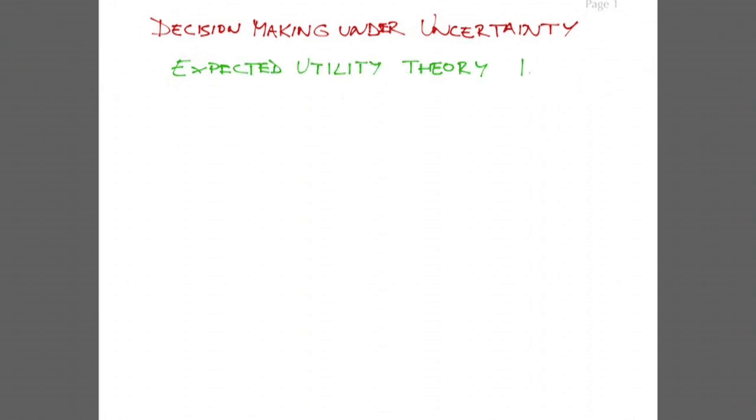Some decisions involve uncertainty. For example, when you make a choice to buy something or to do something, the outcome of your choice may be uncertain. There might be several possible outcomes and you might not know which one will actually happen.